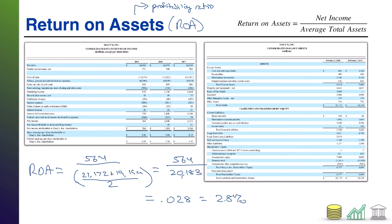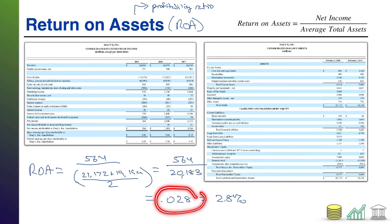So what is this telling us about Macy's? Basically, for every dollar you have in assets — the things that are supposed to generate value — you are generating approximately three cents in profit. Is that good or bad? We would have to compare Macy's to itself in prior years, to its competitors, and to the industry average. It definitely seems low objectively, but maybe that's the expectation for Macy's industry, or maybe it's better or worse than Macy's has done in the past.